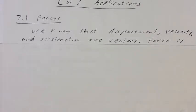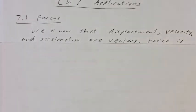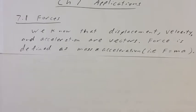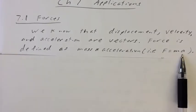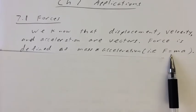So we know that displacement, velocity, and acceleration are all vectors. We've looked at that before — they have a magnitude and a direction. Force is defined as mass times acceleration, so F equals M times A. This is a rough way of stating it; this isn't exactly it yet.